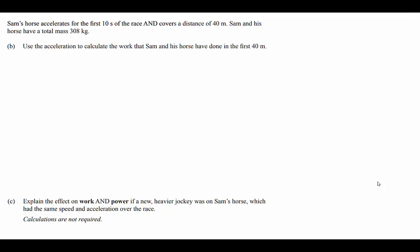Okay so for part B, Sam's horse accelerates for the first 10 seconds of the race and covers a distance of 40 meters. Sam and his horse have a total mass of 308 kilograms. Use the acceleration to calculate the work that Sam and his horse have done in the first 40 meters. So if we use the GUESS method and write down what we've been given and what our unknown is, then our given values are: time = 10s, distance d = 40m, and mass m = 308kg.